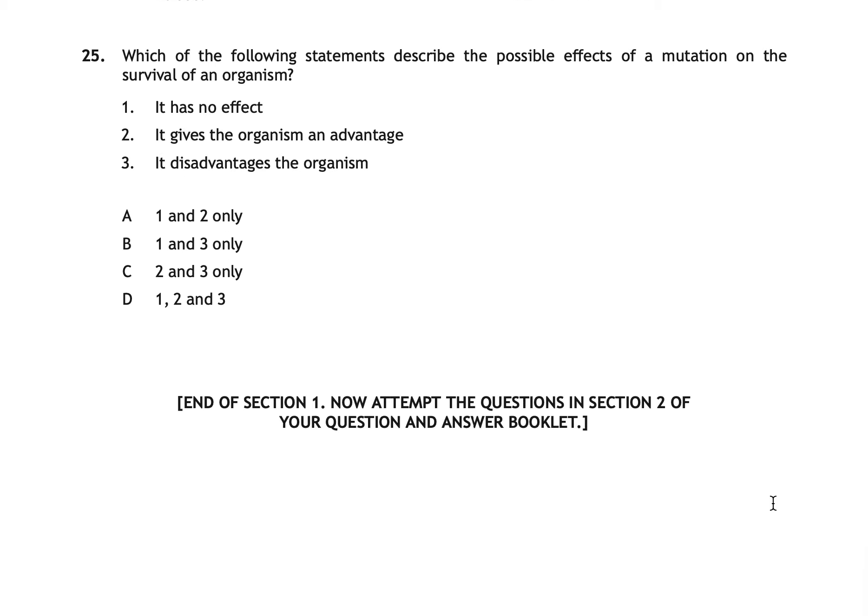Question twenty-five asks which statements describe the possible effects of a mutation on the survival of an organism. The correct answer is D: statements 1, 2, and 3. It's a trick question — mutations can be advantageous, disadvantageous, or entirely neutral with no effect. All three outcomes are possible.